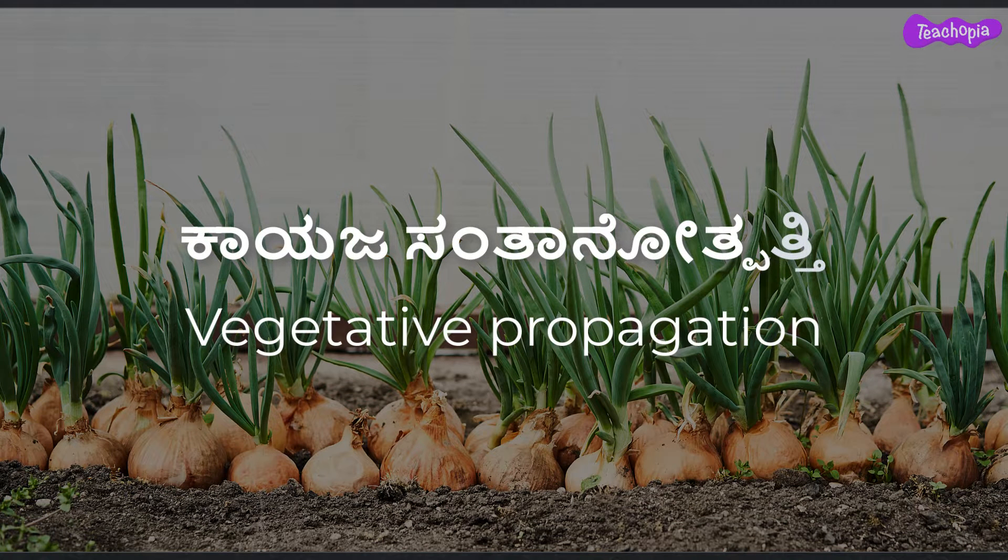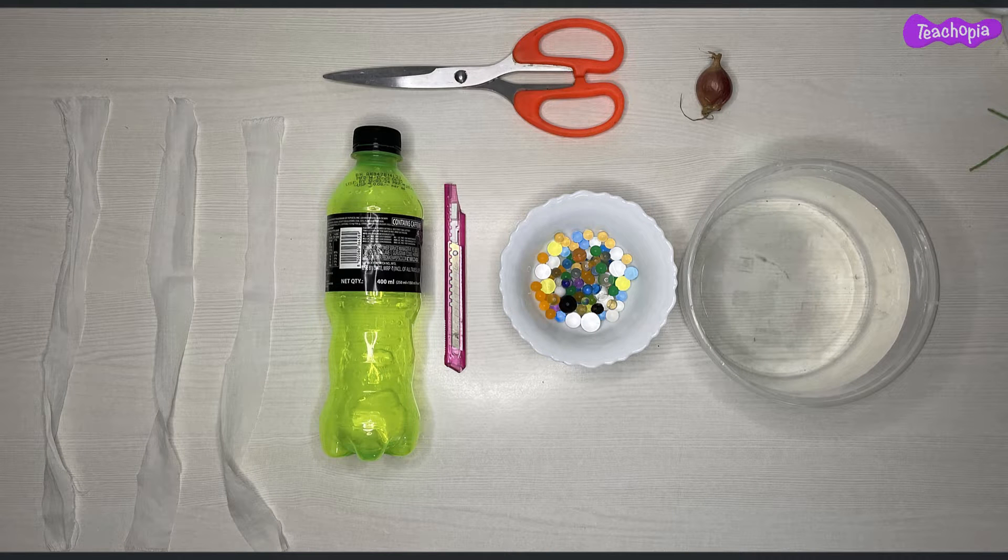This activity helps us understand vegetative propagation. Materials required to do this activity are a transparent bottle, three pieces of cloth strips, paper cutter, scissors, water, soaked gel beads, and onion.